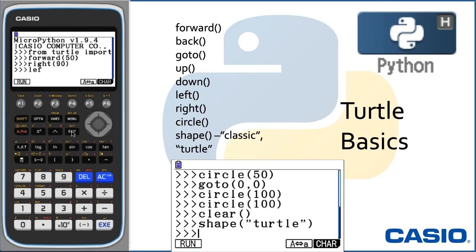So if you put in forward 50, it will go forward 50. Right 90 will turn right 90 degrees. Left 30 will turn 30 degrees from the 90 where it was currently at.